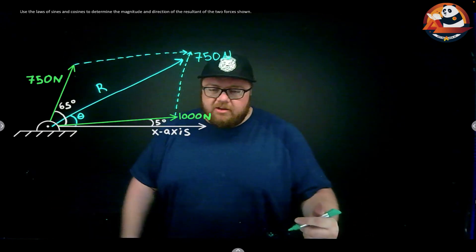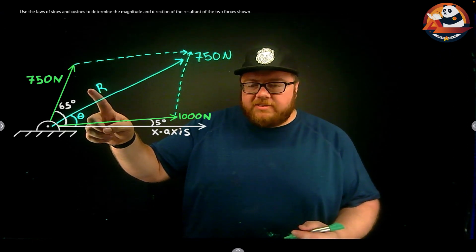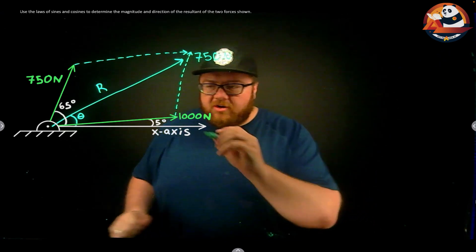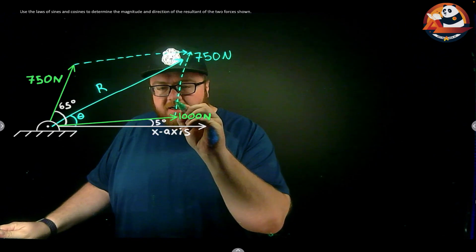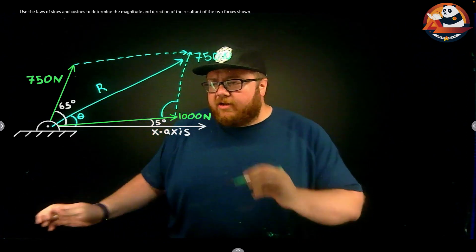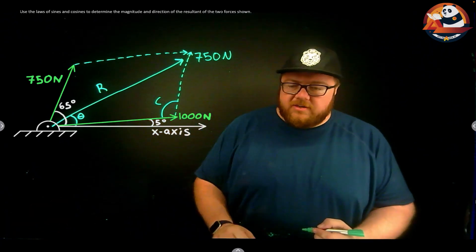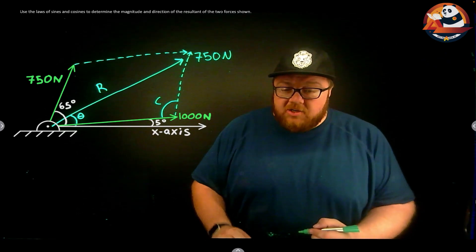We're trying to get R using our law of cosines. I know in my equation I need the angle opposite R - that's going to be in this corner right here. Let's draw in one more angle. I'm going to call that angle C, opposite the resultant force. We have an angle in here.